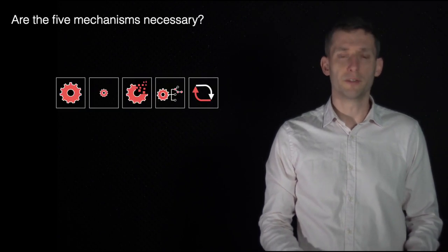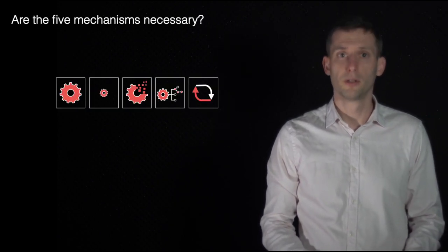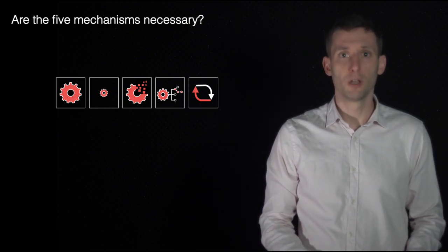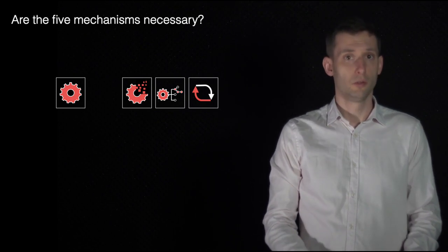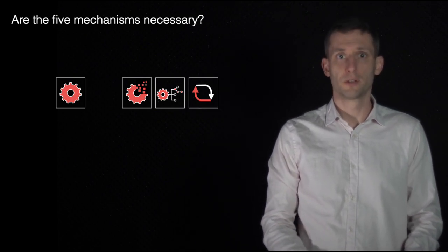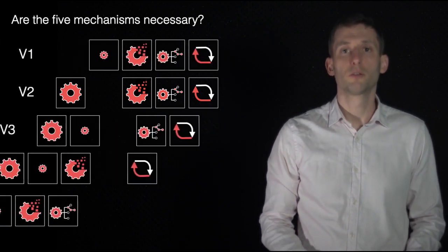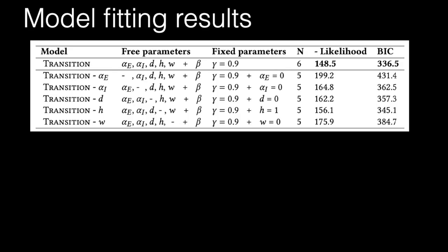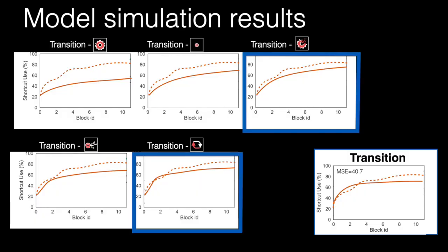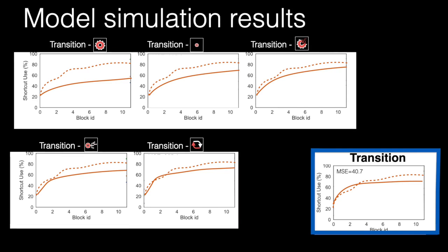Our model relies on five cognitive mechanisms. One question remains: Are these five mechanisms necessary? For instance, can we obtain the same results without the implicit learning mechanism? To answer this question, we consider five variants of this model. For each variant, one cognitive mechanism was removed. Results show that the model with the five cognitive mechanisms better reflects participant data than the five variants in terms of model fitting. The five cognitive mechanisms seem to be necessary. But when considering model simulation, two variants are slightly better than our model. This result suggests that the role of perseveration is not clear.